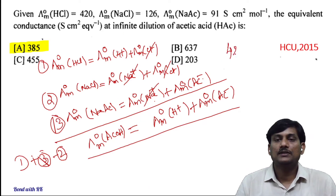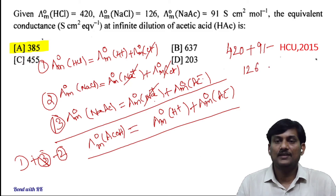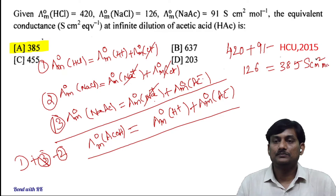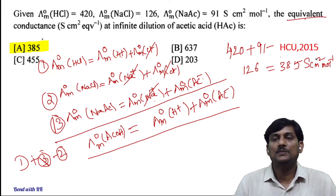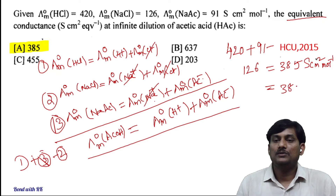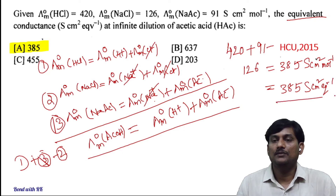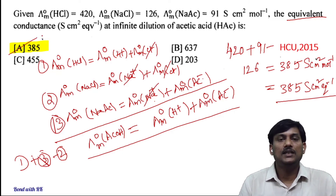So the conductance of acetic acid is the sum of equations 1 and 3 minus equation 2: 420 plus 91 minus 126, which gives 385 S·cm²·mol⁻¹. For acetic acid, the number of equivalents equals the number of moles, so the equivalent weight equals the molar mass. Therefore, in equivalent units you also get 385 S·cm²·equiv⁻¹. The correct option is 385.